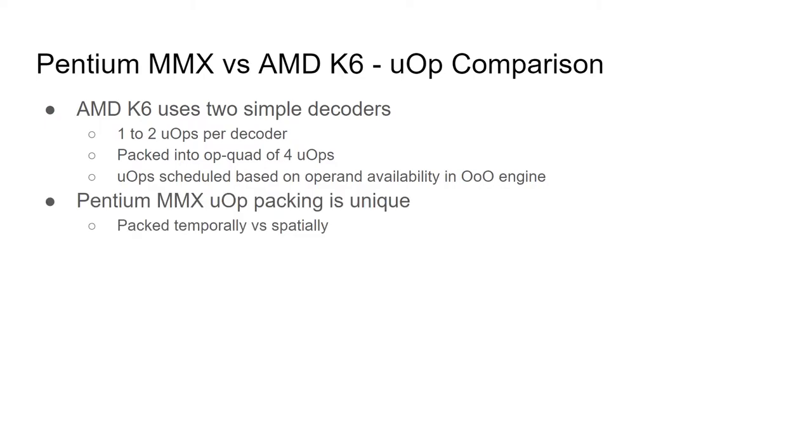These micro-ops are then scheduled based on operand availability in an out-of-order execution engine. In comparison, the Pentium MMX can only execute two micro-ops each cycle and cannot rely on a reorder buffer to schedule the micro-operations. This leaves the scheduling up to the decoders. The end result is that the Pentium MMX packs the micro-ops temporally while the K6 packs them spatially.